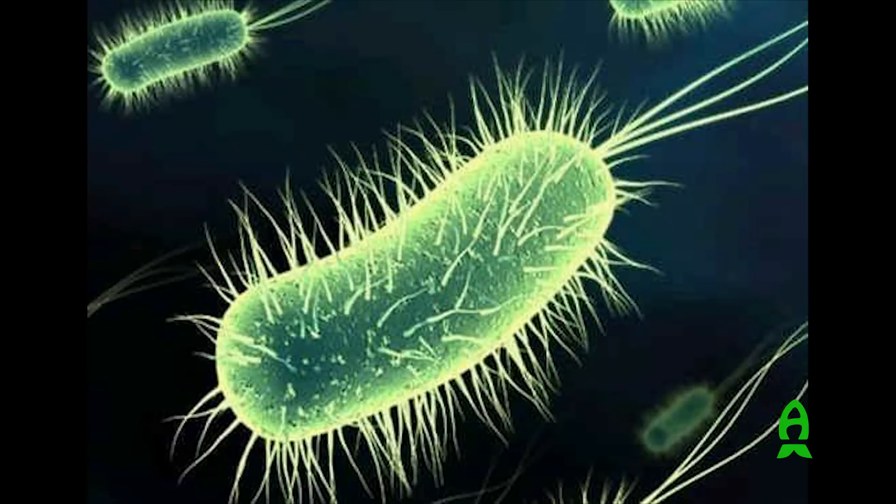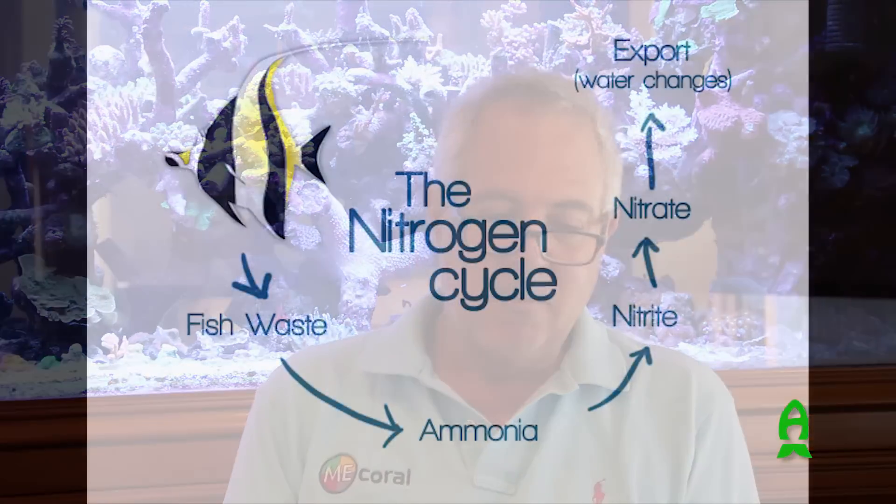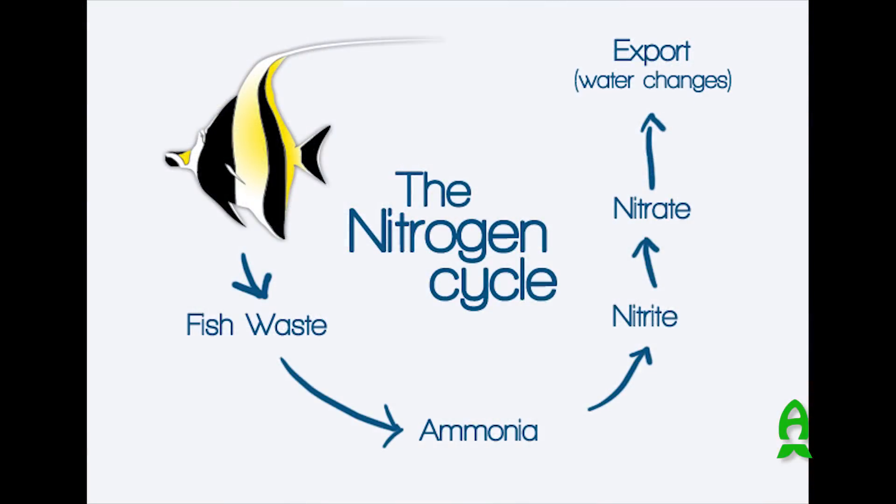Let me try to explain differently. In our tank, we have bacteria whose role it is to consume waste. We feed our fish; some of that food is undigested, and the rest ends up as fish waste. That waste, along with other stuff in our tank, turns into ammonia, which turns into nitrite, which turns into nitrate. Nitrate becomes a problem in our system along with phosphates — we call them nutrients.